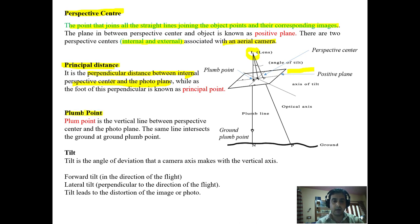Now coming to plumb bob. Plumb bob is the vertical line between perspective center and the photo plane. The perspective center is here and the photo plane is here. And this is the plumb point. And the vertically distance below it on the ground is known as ground plumb point.